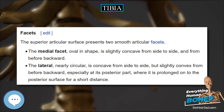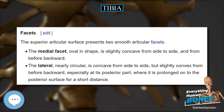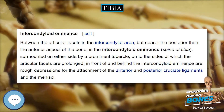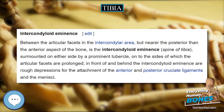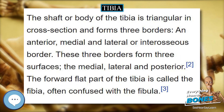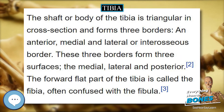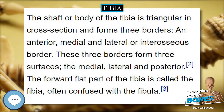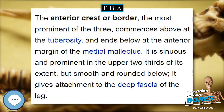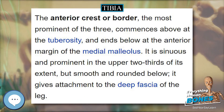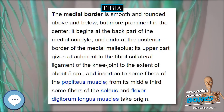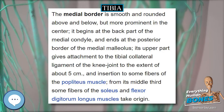The posterior surface presents, at its upper part, a prominent ridge, the popliteal line, which extends obliquely downward from the back part of the articular facet for the fibula to the medial border, at the junction of its upper and middle thirds. It marks the lower limit of the insertion of the popliteus, serves for the attachment of the fascia covering this muscle, and gives origin to part of the soleus, flexor digitorum longus, and tibialis posterior.